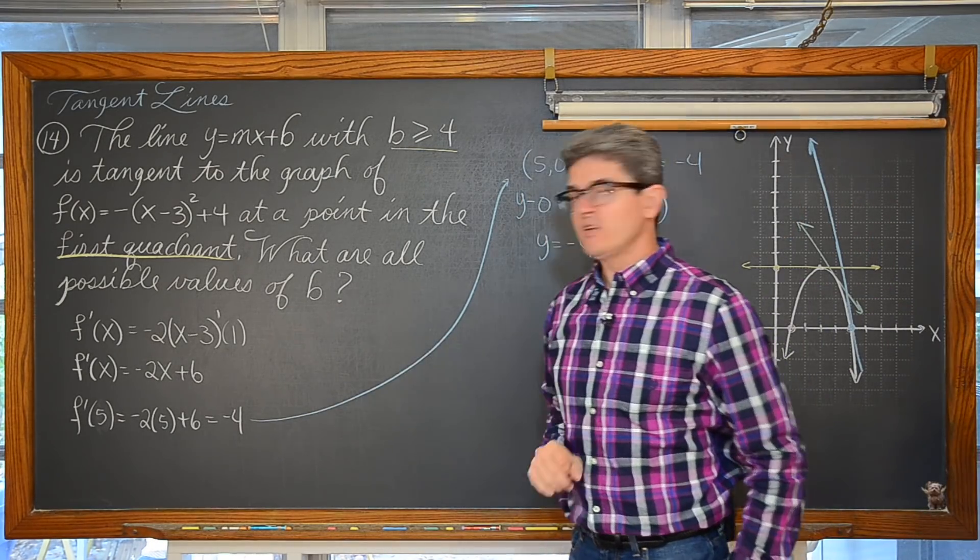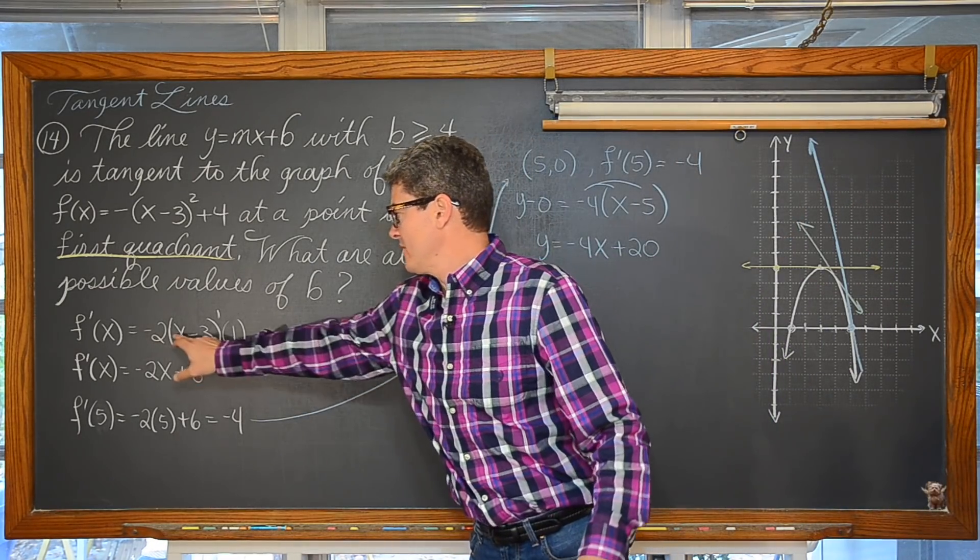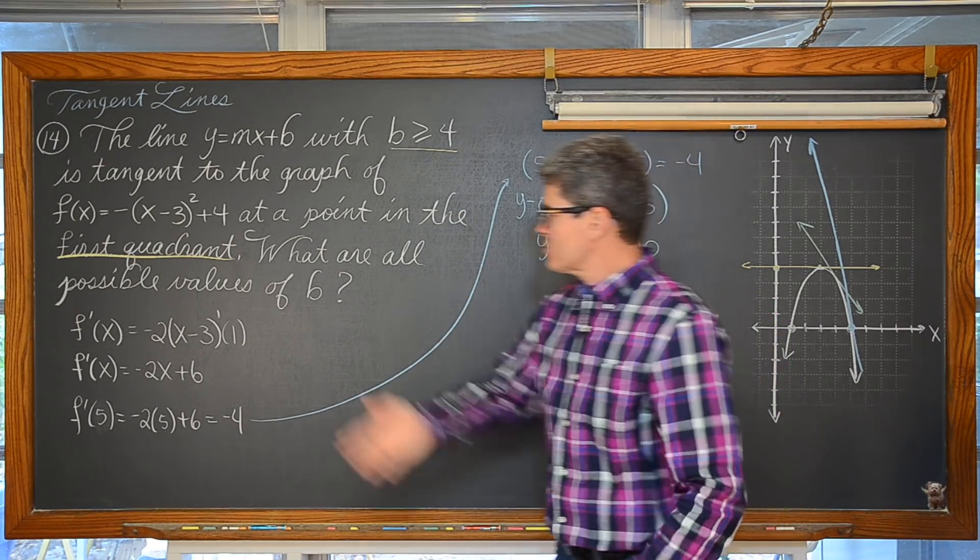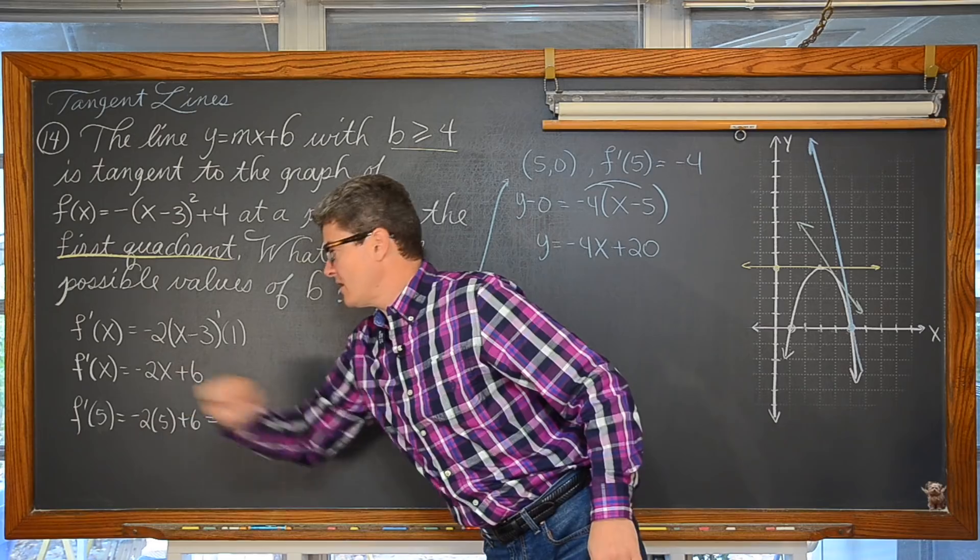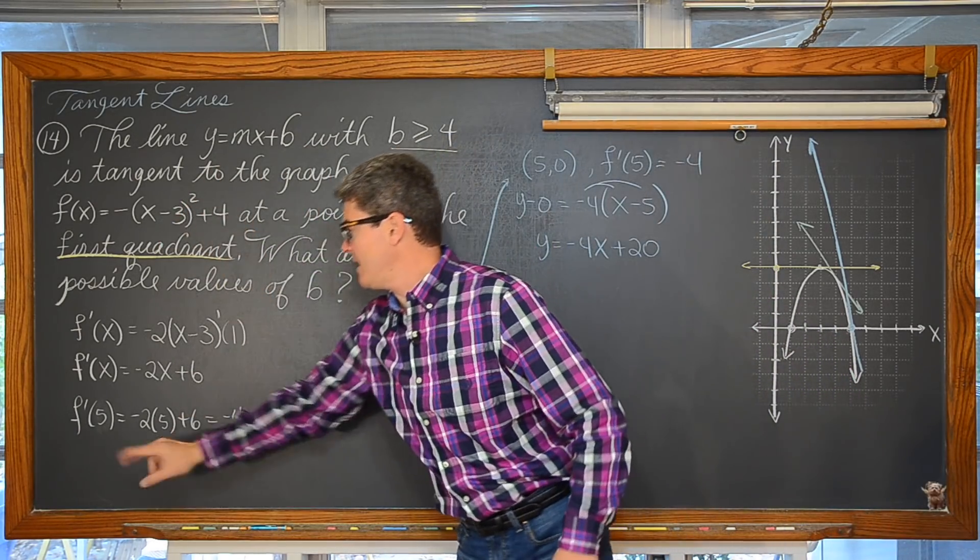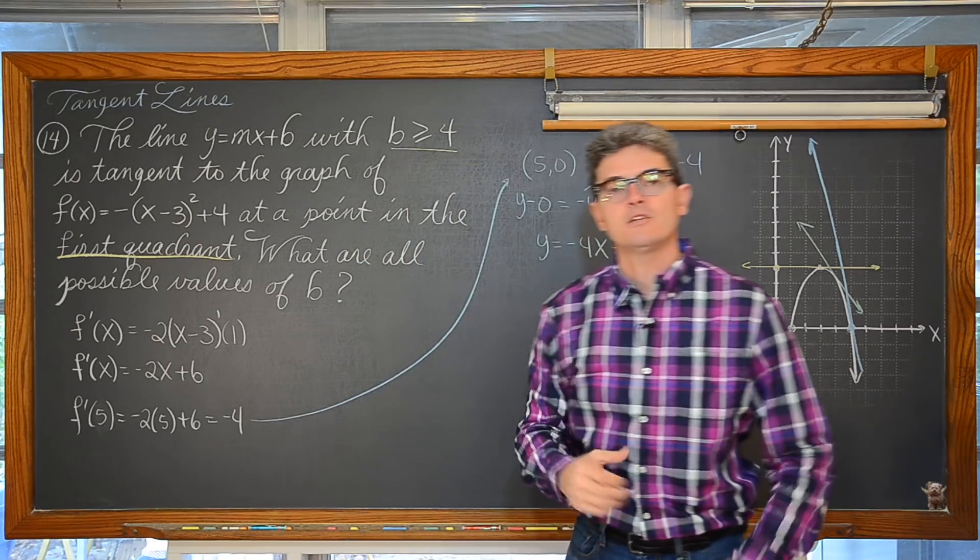So we went ahead and found that derivative. I am showing the use of the chain rule there even though of course the derivative of x minus 3 is equal to 1. Distribute the negative 2. Plug in our x value of 5 and the slope of our parabola at the x value of 5 comes out to be negative 4. Of course we know.